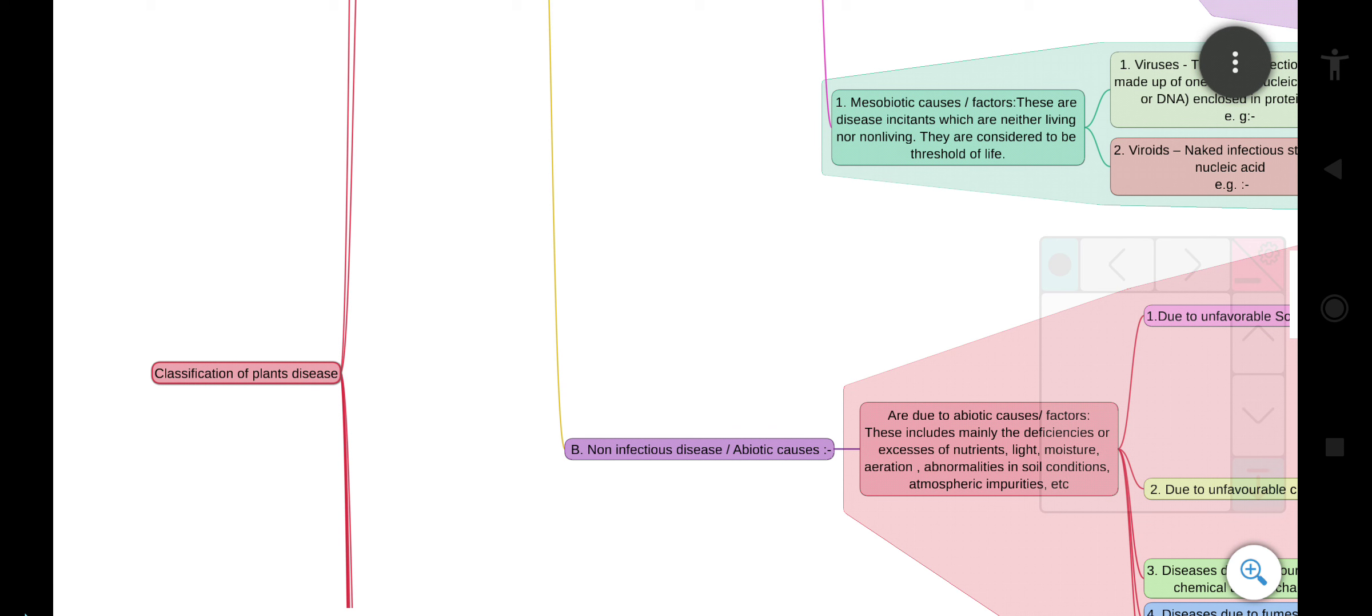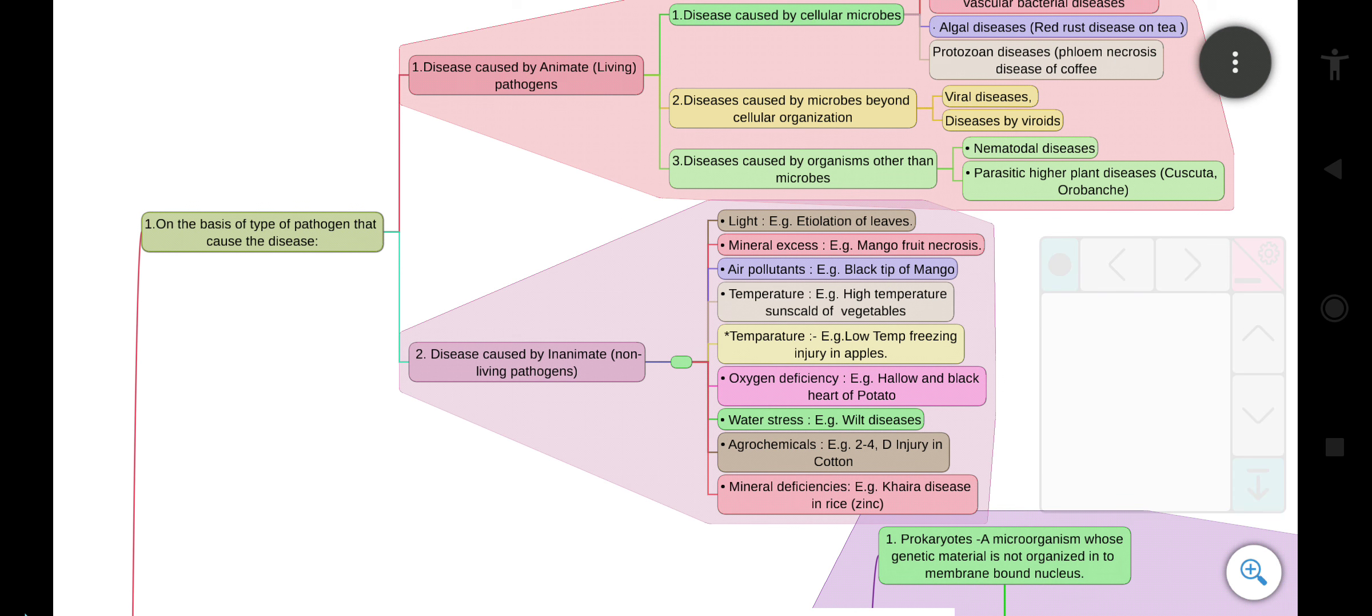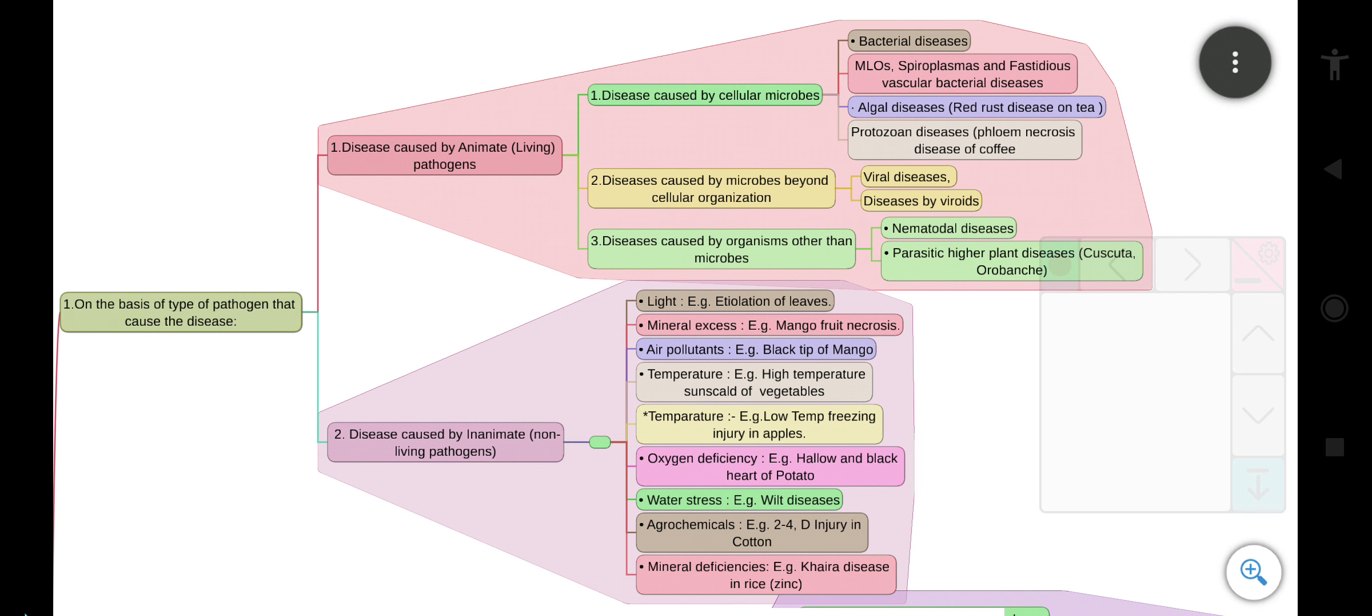So we start classification of plant disease. First one is on the basis of type of pathogen that causes the disease. It is divided into two parts: the first is caused by animate or living pathogens.